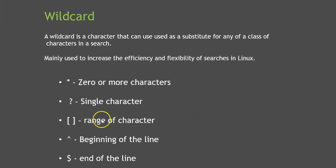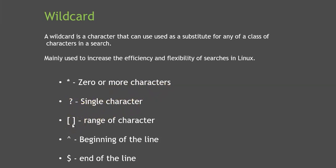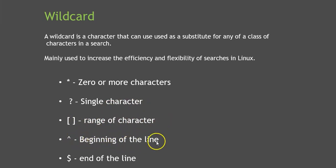We can use multiple wildcards. For example, the star represents zero or more characters. The question mark is a single character. Square brackets can be used for a range of characters. The caret symbol represents the beginning of the line, and the dollar symbol represents the end of the line. Let's use these wildcards on our Linux machine with some examples.